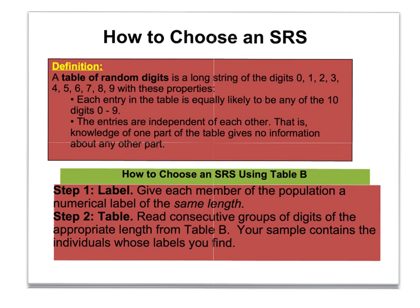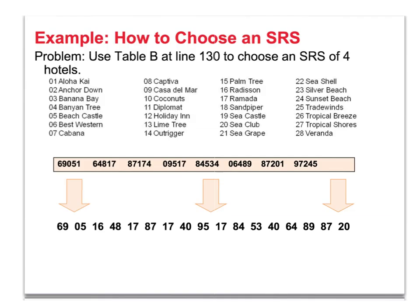You want to make sure everybody in the population has a numerical label of the same length. If I have 100 people, 100 is a 3-digit number, so I assign every individual a 3-digit number from 001 up to 100. Alternatively, I could assign everyone a 2-digit number from 00 to 99, giving me 100 values. So you can use 00 to 99, or 001 to 100, to randomly select from 100 people.